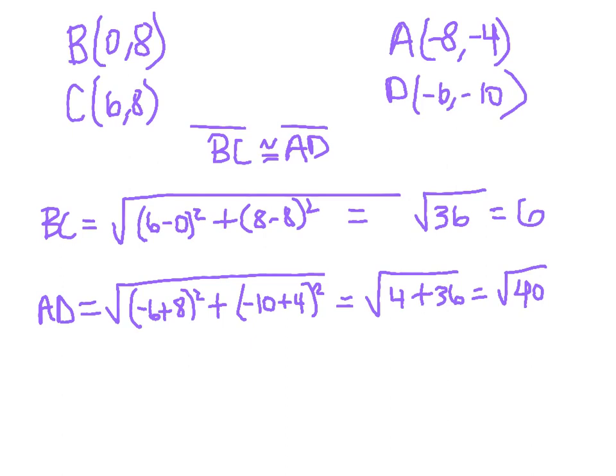Now go ahead and do the same thing for AD. So when you put in the values for AD, you can see what happens here is we get negative 6 plus 8 squared and negative 10 plus 4 squared. When we add that together, 4 plus 36, we get 40, the square root of 40. Well clearly 6 and square root of 40 are not equal.